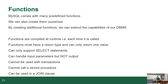Functions must have a return type and they only return one value. Whereas with a stored procedure you have output parameters, so you can return multiple values outside the procedure. With a function, you have multiple parameters coming in but one value coming out. Functions only support SELECT statements theoretically, they can handle input parameters but not output, they can't be used within a transaction, and they can't call a stored procedure. But they can be used in a JOIN — that's the standard function behavior.